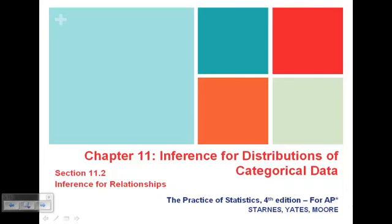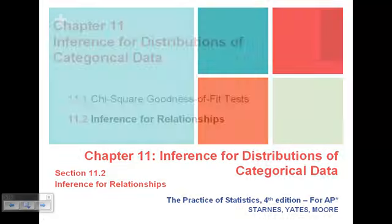Today is February 27, 2012. This is AP Statistics at Berkeley High School, and we're going to finish up Chapter 11 right now, looking for inference for relationships.